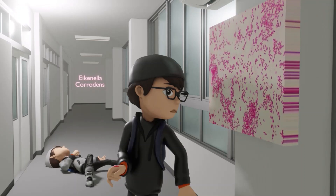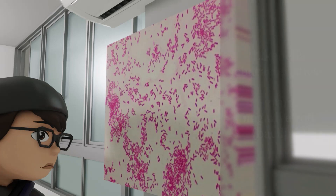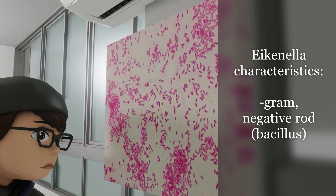Before we move further in the scene, we notice that the boy passed by a poster showing a gram stain of Eikenella corrodens. We see that it is in fact a gram-negative pathogen, and specifically a gram-negative rod.